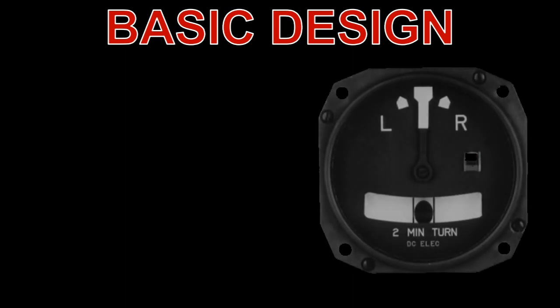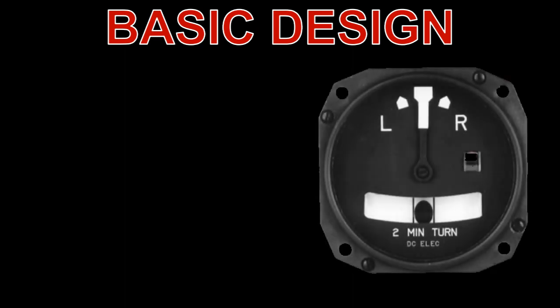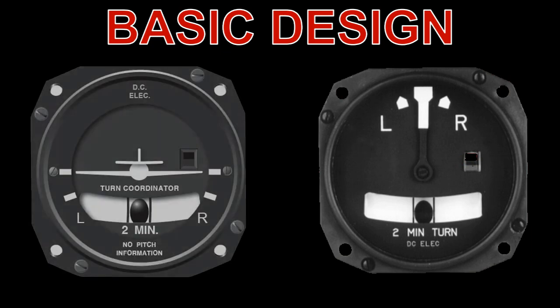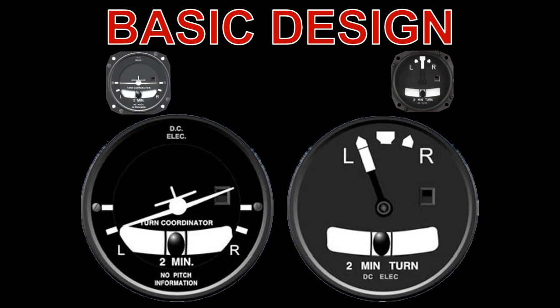Whilst there are several variations of design available, the instrument is generally one of two kinds. The first design uses a turn indicator with a needle, and the other uses a diagram of an aircraft. Both the needle and the aircraft will rotate towards the L or R as the aircraft turns.